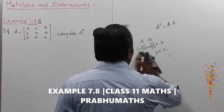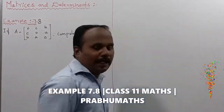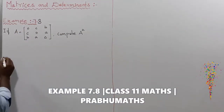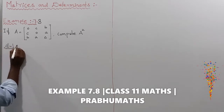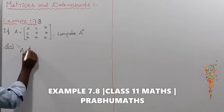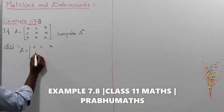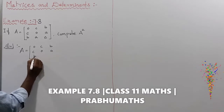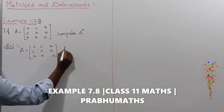So first of all, the given values: A is equal to the matrix with first row [0, c, b], second row [c, 0, a], and third row [b, a, 0]. To find A squared.